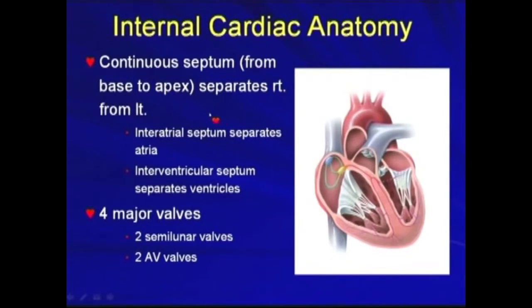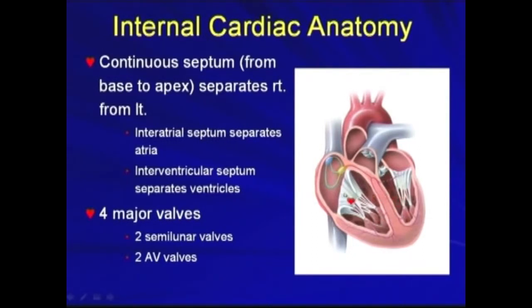When we look at the internal cardiac anatomy, there is a continuous septum from the base to the apex separating right from left. In the atrium, there is the interatrial septum. In the ventricle, there is the interventricular septum. There are four major valves: two semilunar valves and two AV valves separating the atria from the ventricles.